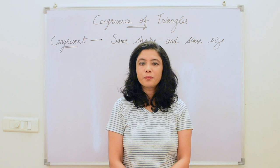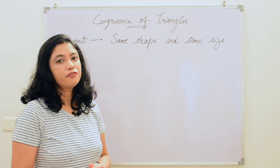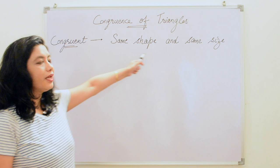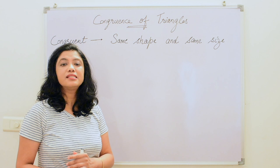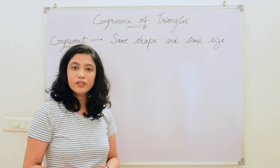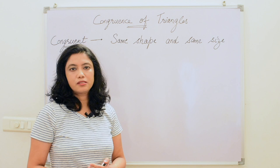Hello friends, welcome to CRISP class. I am Monica and today we will study congruence of triangles. Let us first study the meaning of congruent. Congruent means same shape and same size — two objects are congruent when they have the same shape and the same size, meaning they are copies of each other. When two figures are placed one over the other and they cover each other completely, they are called congruent figures.